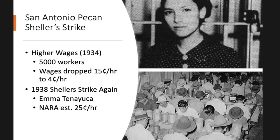One of the other famous strikes was the San Antonio Pecan Sheller Strike. In 1934, some 5,000 workers went on strike. Their conditions, as shown in the picture, were crowded rooms tightly packed where they would shell pecans. While mechanized shelling machines existed, San Antonio was still doing it by hand because employers felt some obligation to keep workers employed — but they just could not pay what workers wanted. The wages were as low as 15 cents an hour, dropping to 4 cents an hour, making it very difficult to earn a living.